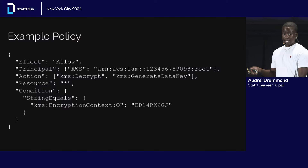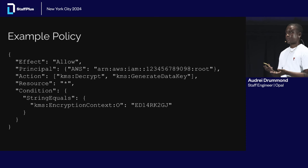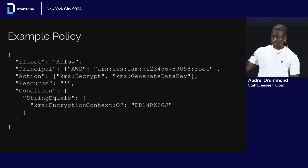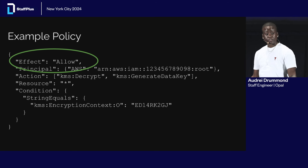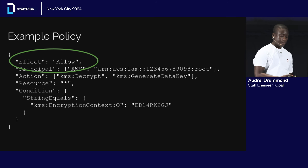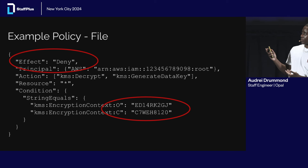More concretely, this is what a baseline policy would look like — allowing access to use two APIs, decrypt and generate data key, for a particular enterprise ID. In a case where they wanted to deny Slack's access to a particular channel, they would change a policy to deny for a particular organization and channel.